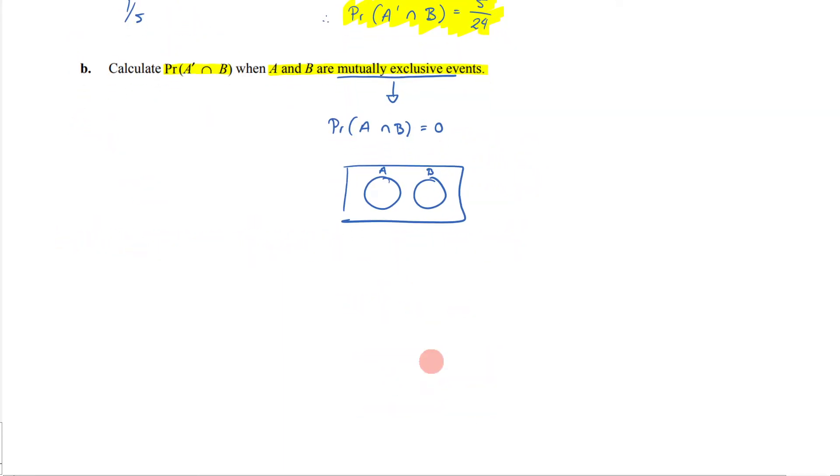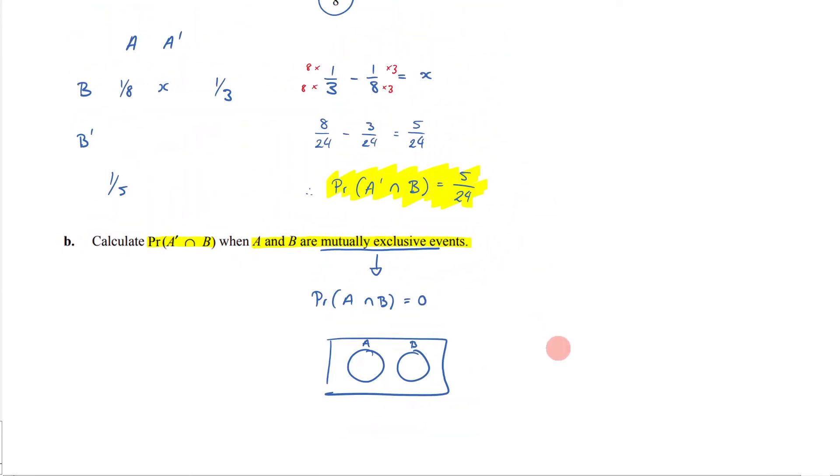So what I would do here is I would draw for myself another Karnaugh map. I would say, all right, we've got A, A dash. We've got B, B dash. I know that A is 1/5. I know that B is 1/3. And now, what I know, based on what I've been told here, is that A intersection B is 0.